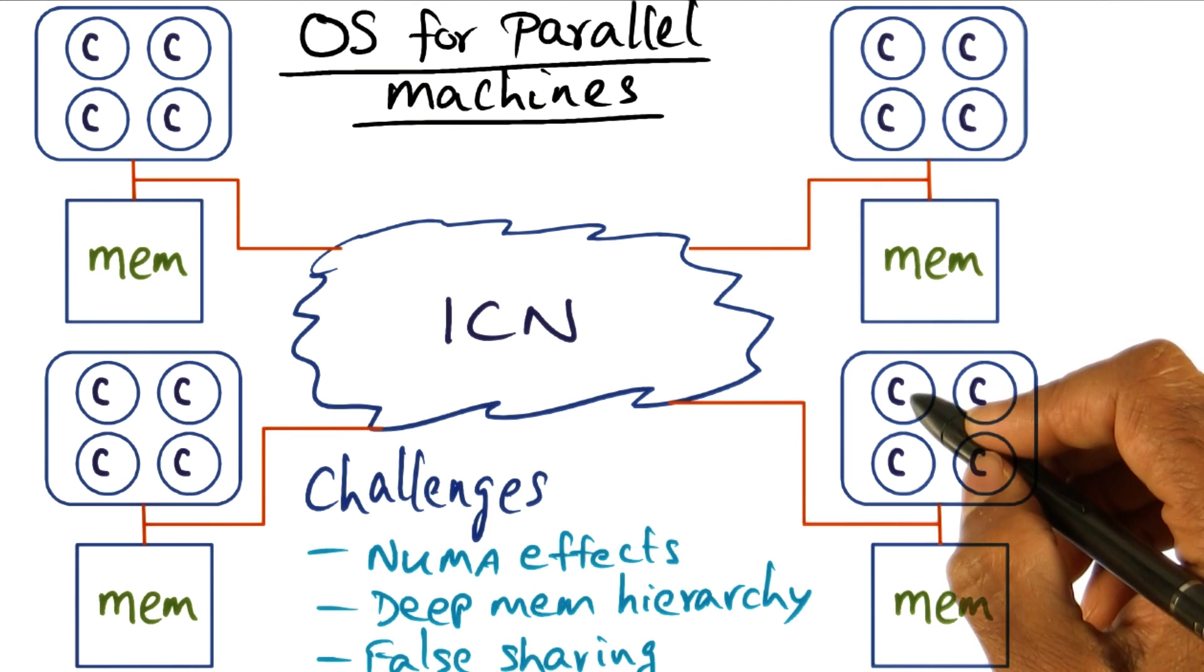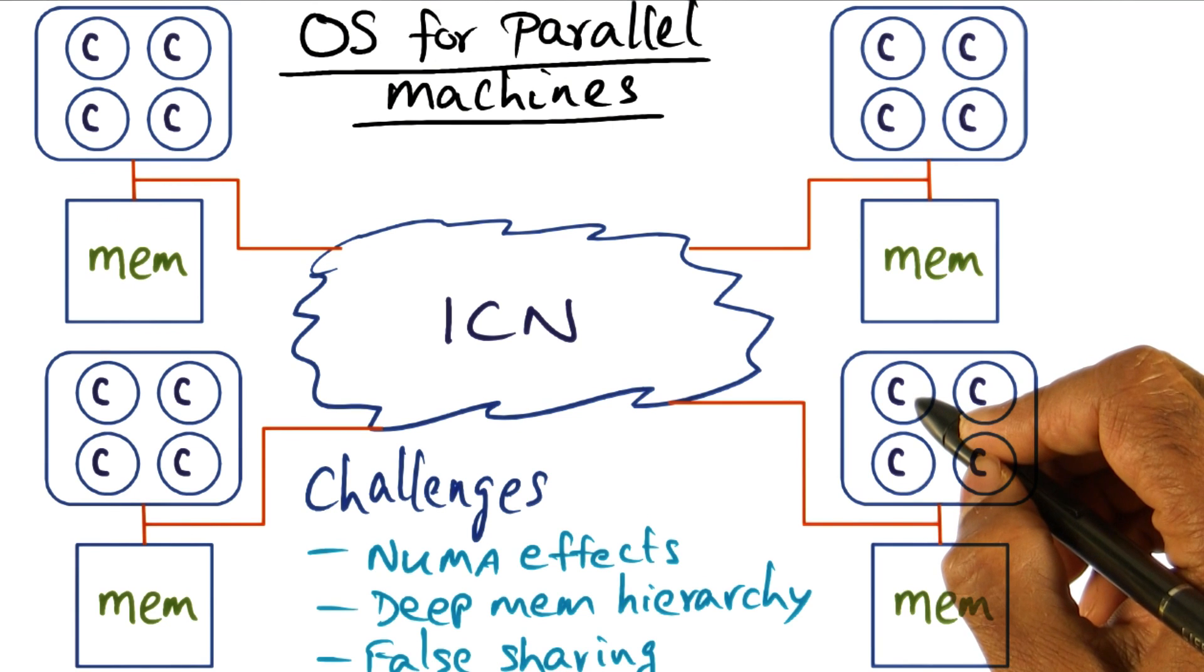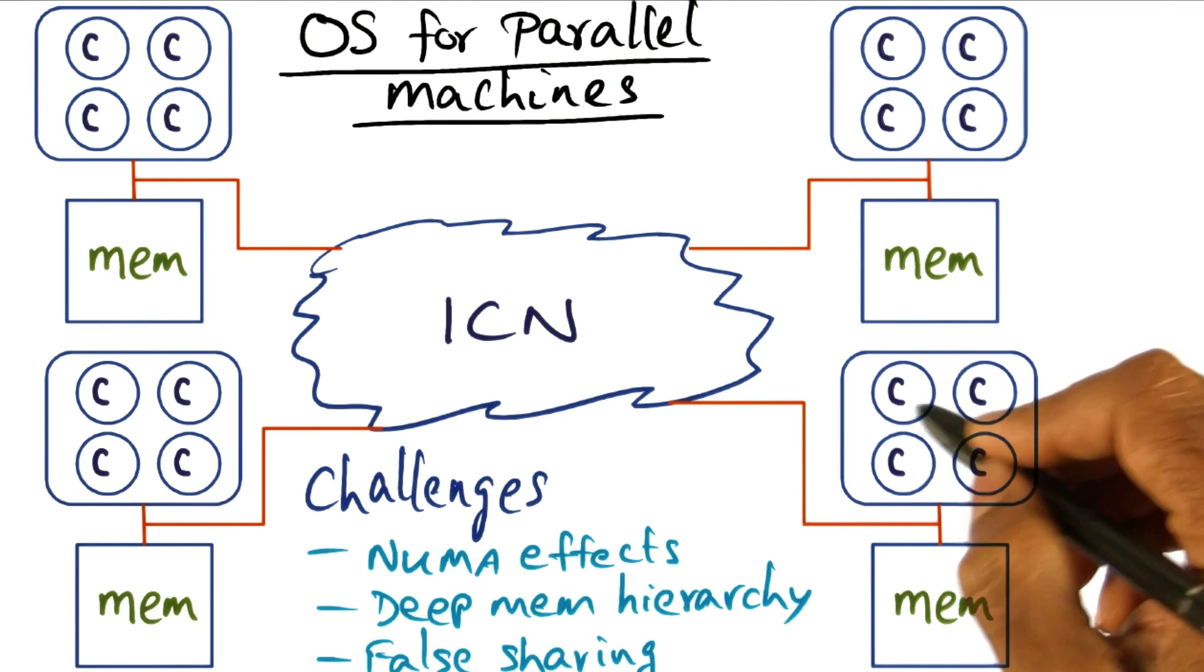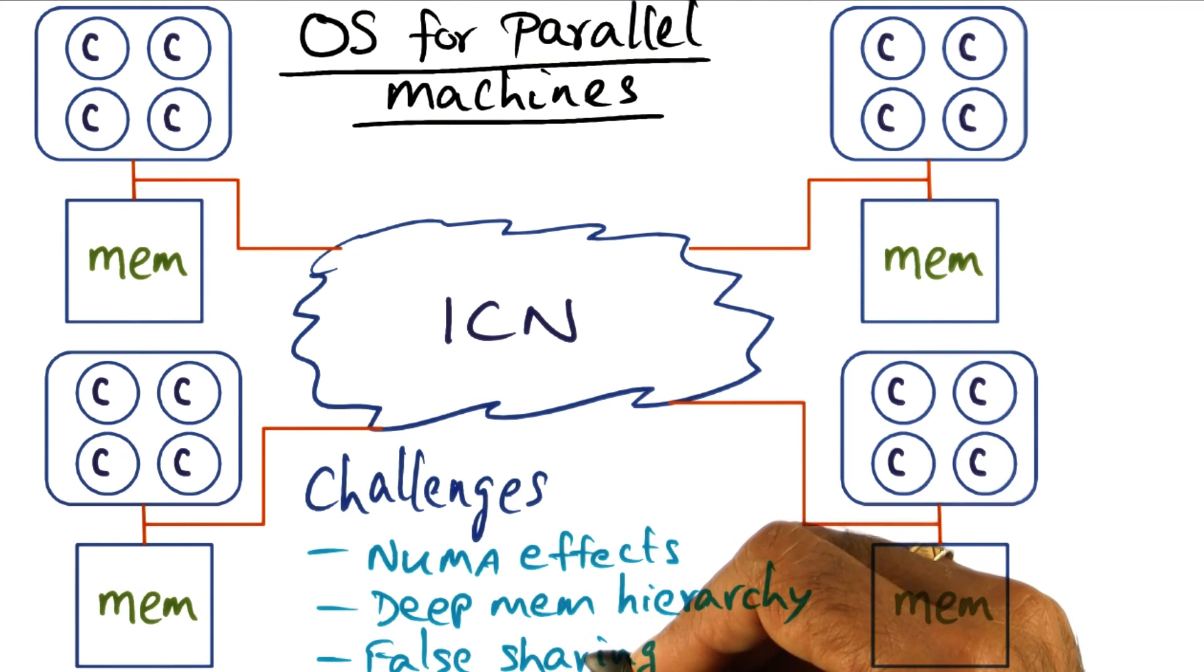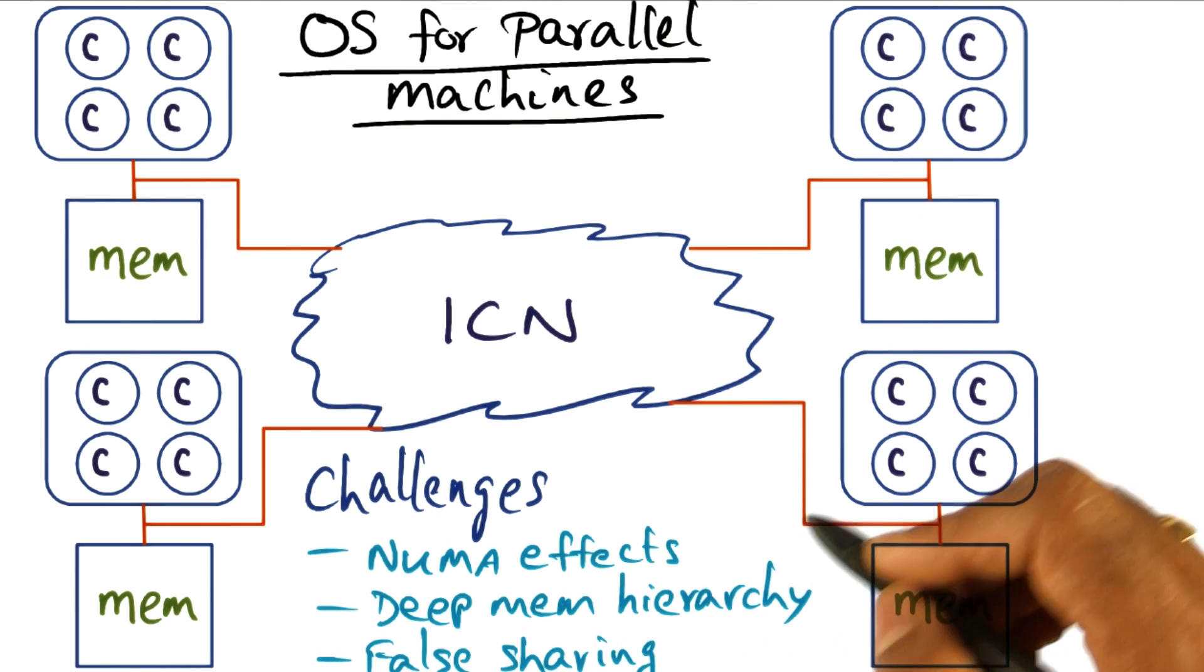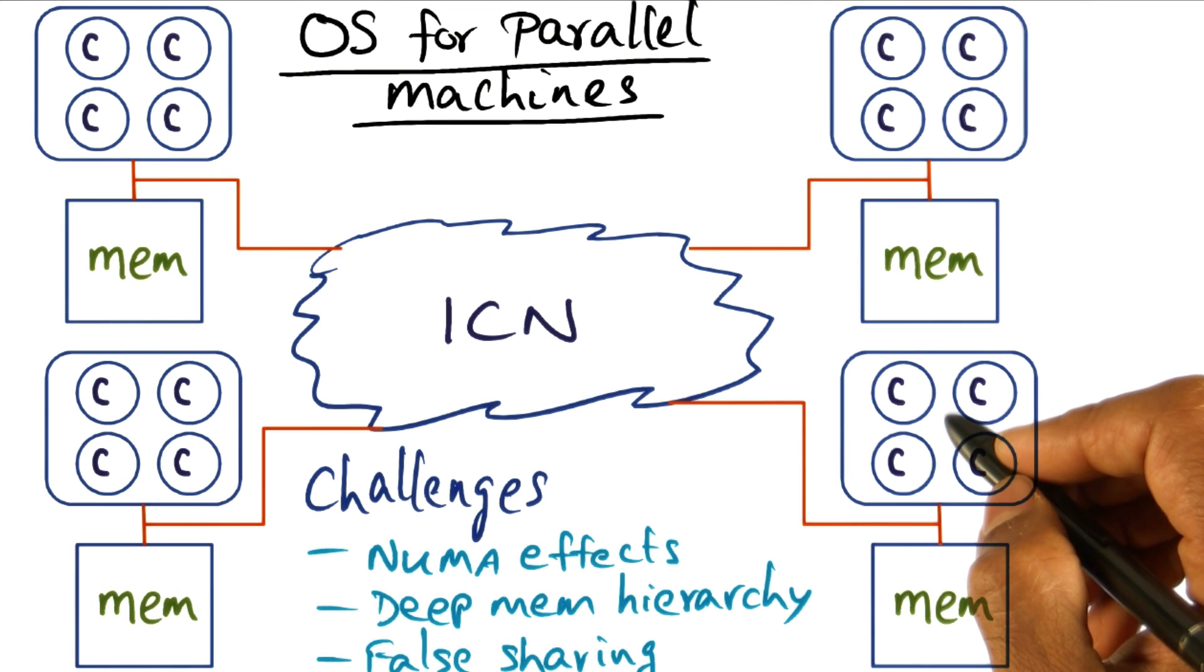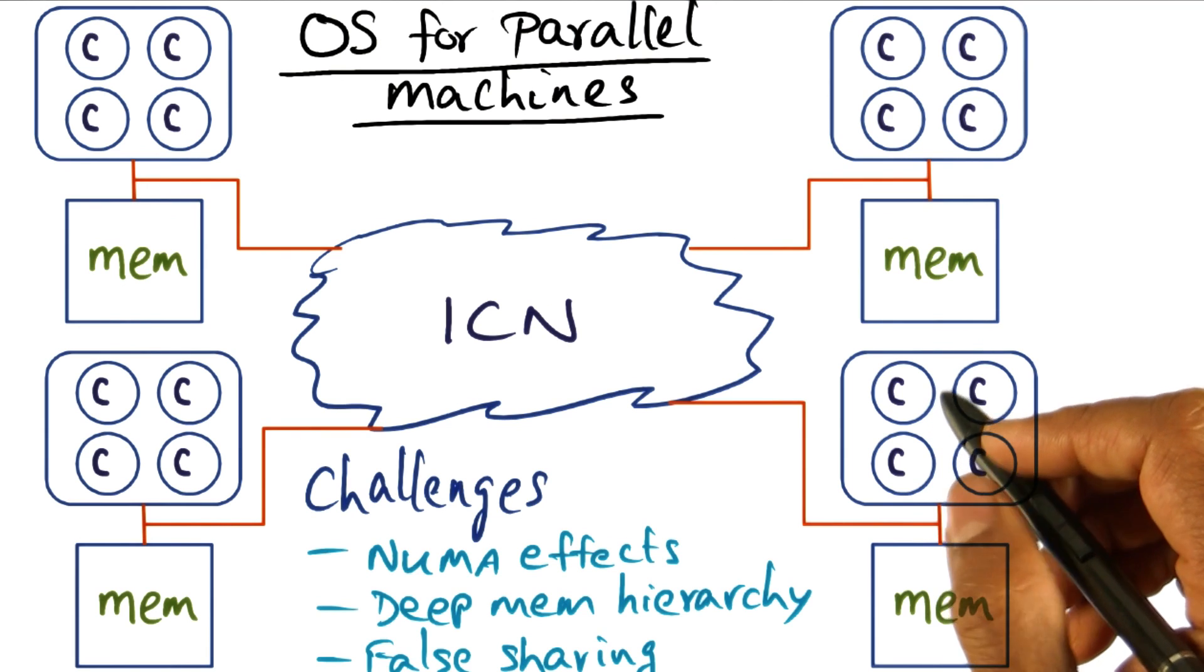So programmatically there is no sharing, but because of the fact that the memory that is being touched by a thread on this core and the memory that is being touched by a thread on this core happen to be on the same cache line, they appear to be shared. That's what is false sharing. False sharing is essentially saying that there is no programmatic sharing, but because of the way the cache coherence mechanism operates, they appear shared. And this is happening more and more in modern processes because modern processes tend to employ larger cache blocks.